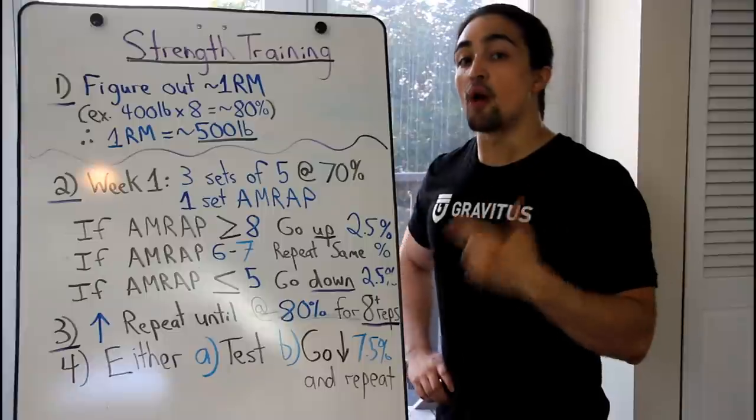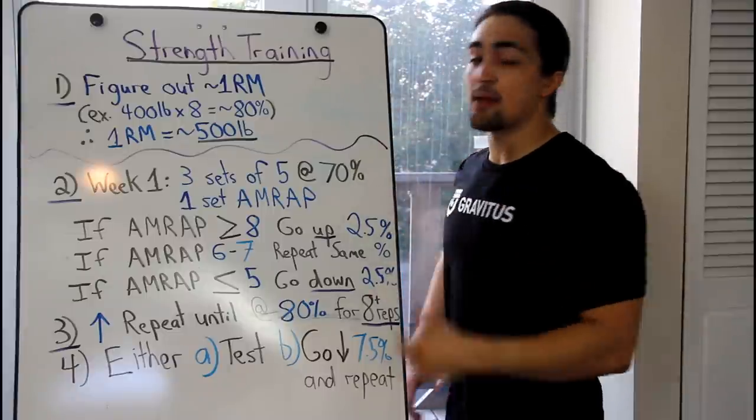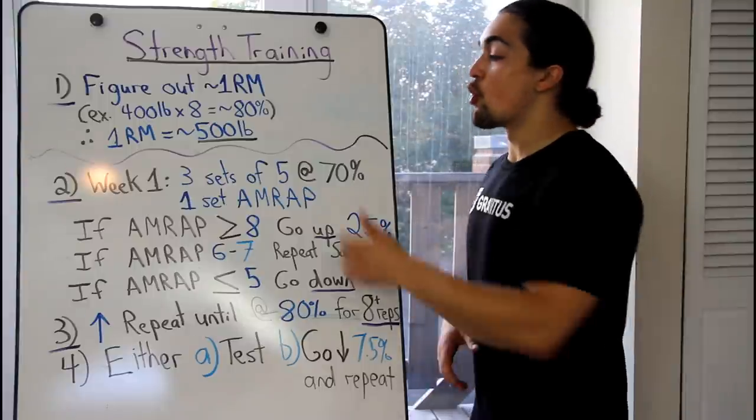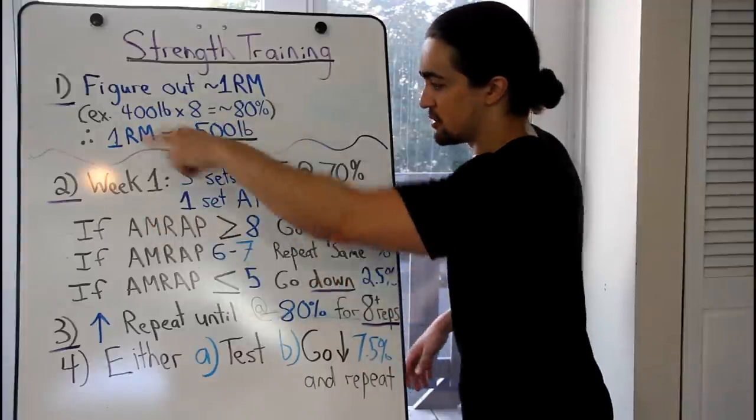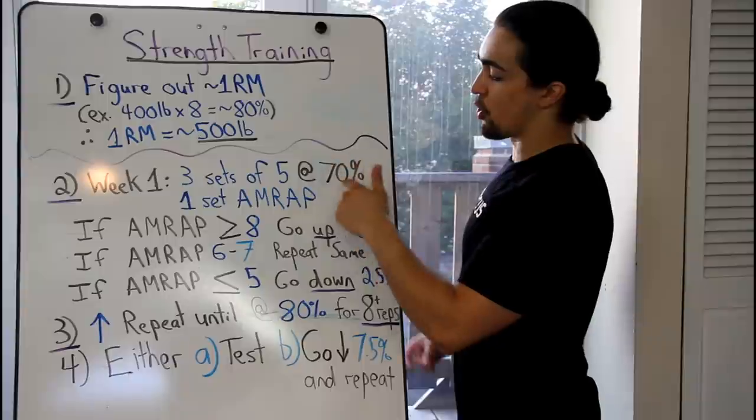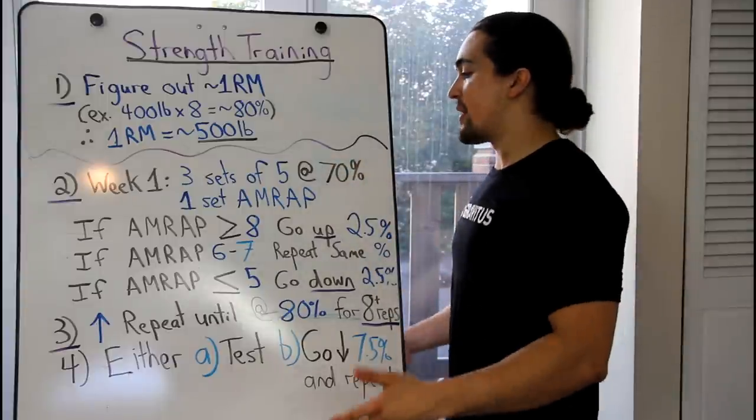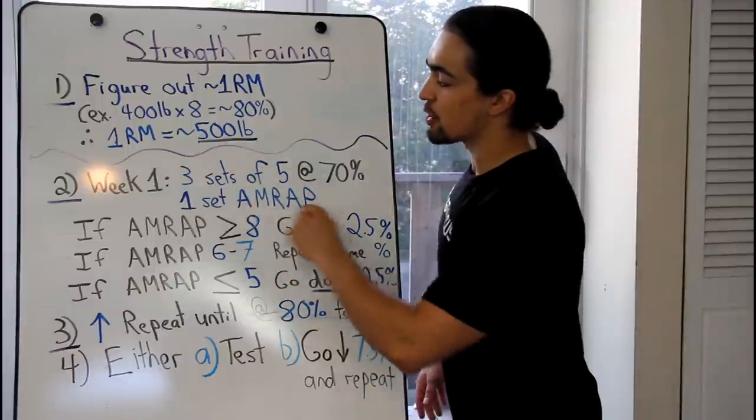Because this is 70% of your one rep max, you should be able to get at least eight, nine, more like 10, 11, 12 repetitions for your week one. If you do that, after you do this, so you do this whole thing, you squat. Let's say this is your squat. You squat 500 pounds. You're working at 70%, so that's probably, what is that, 360 pounds, I believe.